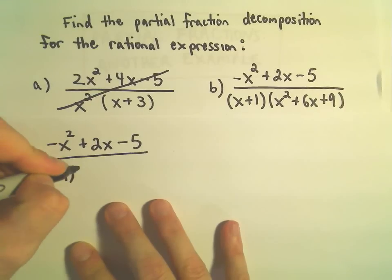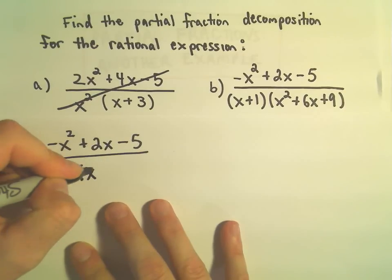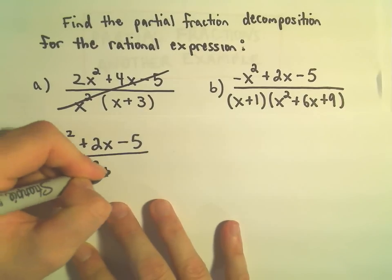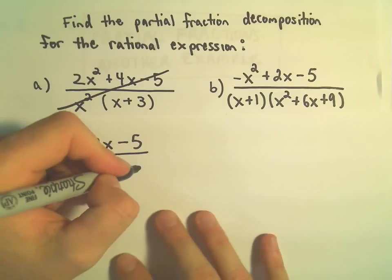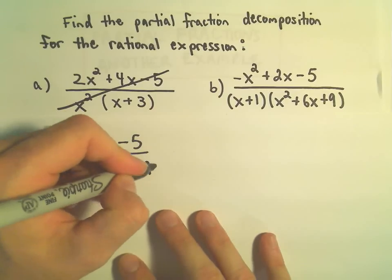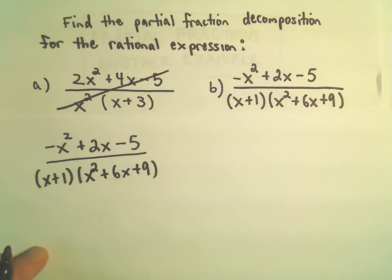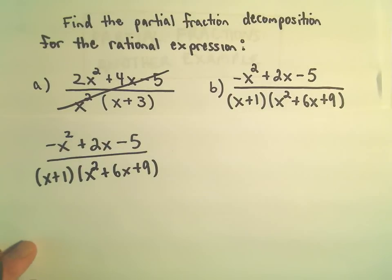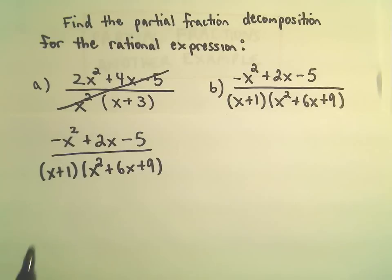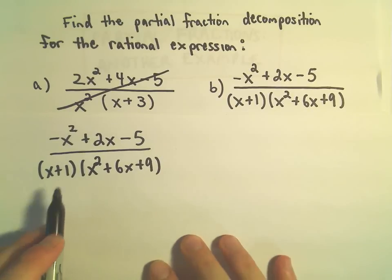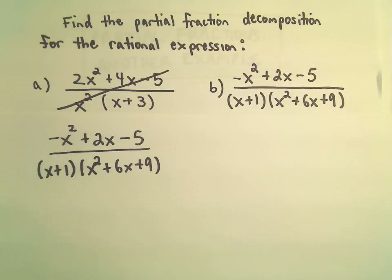But if I were to multiply out the denominator in this case, I recognize that I would really just get an x cubed as my highest power term — degree 3 — so we don't have to worry about long division.